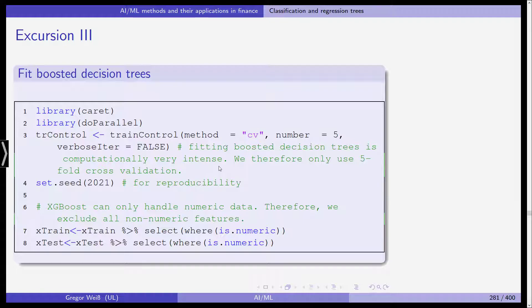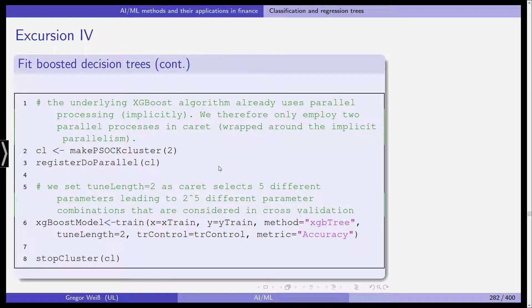If you start the parallel computing session before that and you move this to a cluster, you can also try tenfold cross-validation. Set C as is tradition and we have X-train and X-test with the numeric data. So we again exclude all categorical features. The underlying XGBoost algorithm already uses parallel processing implicitly. Therefore, we only employ two parallel processes in caret wrapped around the implicit parallelism that is included in XGBoost. So we set the tune length equal to two as caret selects five different parameters and this will lead to two to the fifth power different parameter combinations that are considered in cross-validation.